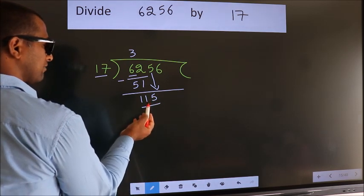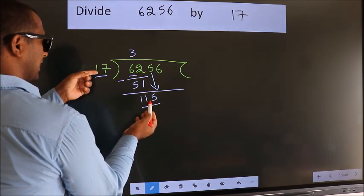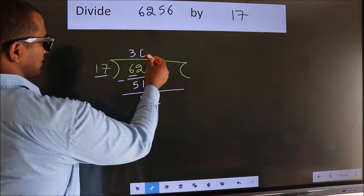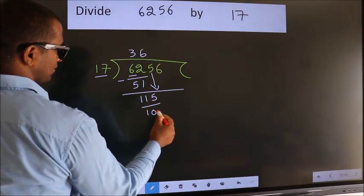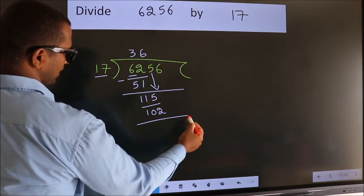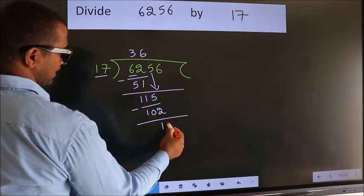A number close to 115 in the 17 table is 17 times 6, 102. Now we subtract. We get 13.